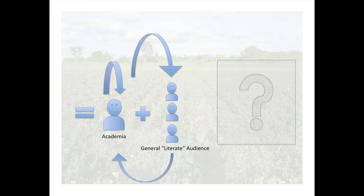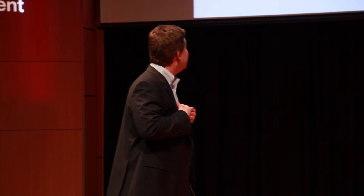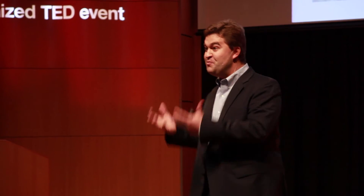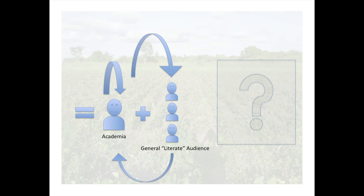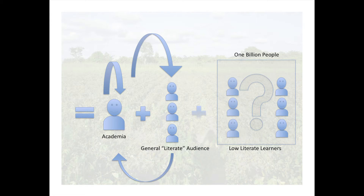So this is what I like to call the learning equation — it's a simplification. On the left we have academia. And a friend of mine said, if you point a finger at other people, three fingers point back at you. So when I make this next comment, please don't be offended because I'm criticizing myself as well. In academia, we're really good at talking with ourselves. We publish book chapters, we publish papers to talk with ourselves. We go to conferences and stand up on stage and talk with other academics. Once in a while we get this information out into the general literate audience, but there seems to be something we're missing in this equation — it's one billion people that are left out of this information equation.